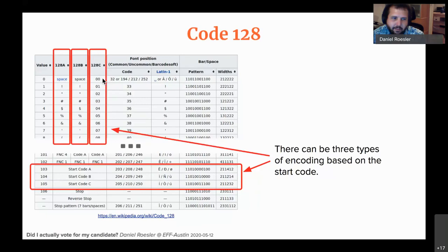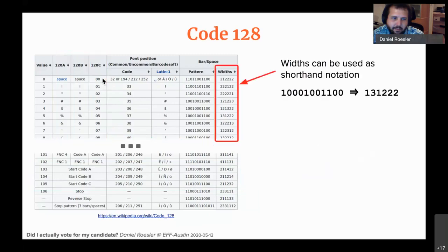One more thing to note: you don't have to write down ones and zeros. You can create a shorthand notation that describes how wide the bars or spaces are. For example, a set of ones and zeros for a character becomes: one wide bar, three wide space, one wide bar, two wide space, two wide bar, two wide space — noted as 1-3-1-2-2-2 — because you're alternating bars and spaces.